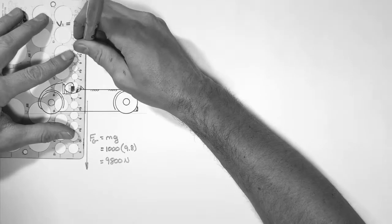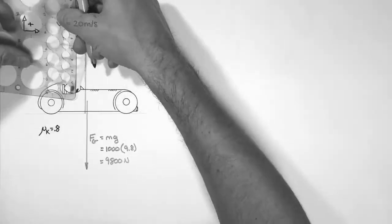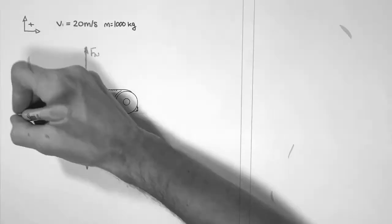Next, we have the normal force by the ground acting upward on the car. And finally, there's friction acting backwards to slow the car down.